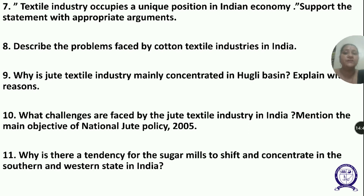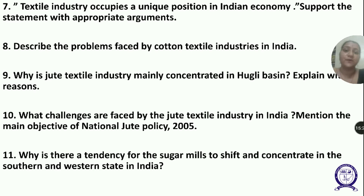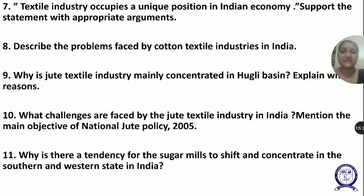Next question: Why is the jute textile industry mainly concentrated in the Hooghly Basin? Jute-producing areas are nearer to the Hooghly Basin. There is a good network of rivers providing inexpensive water transport and abundant water supply for jute processing. Good rail and road networks facilitate supply of raw material to mills and finished goods to markets. Cheap labor is available from West Bengal and neighboring states like Bihar, Odisha, and Uttar Pradesh. Kolkata provides banking, insurance, and port facilities for export of jute goods.